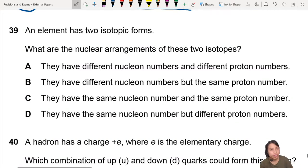This is from chapter 26, the final chapter of AS Physics. An element has two isotopic forms. Actually, this sounds like chemistry. What are the nuclear arrangements of these two isotopes? What are isotopes? You gotta know what are isotopes.